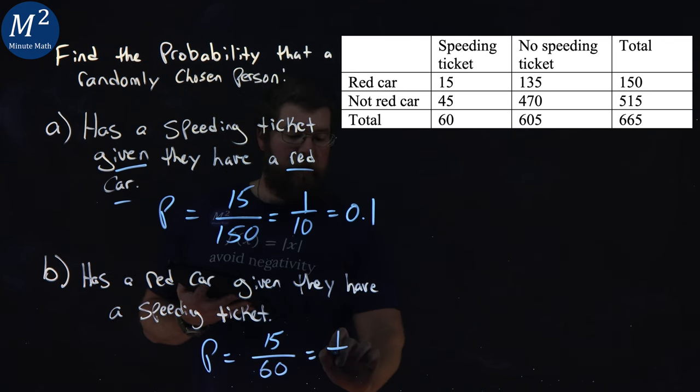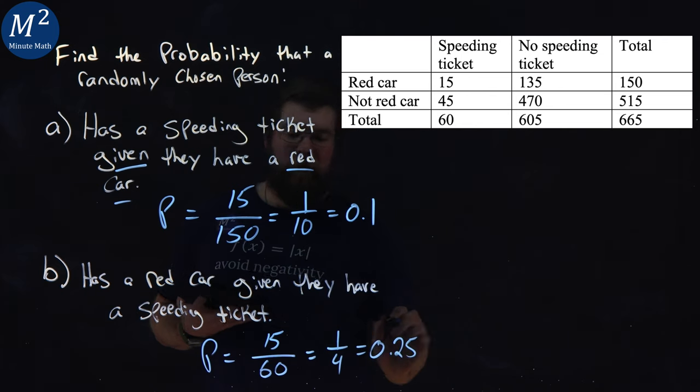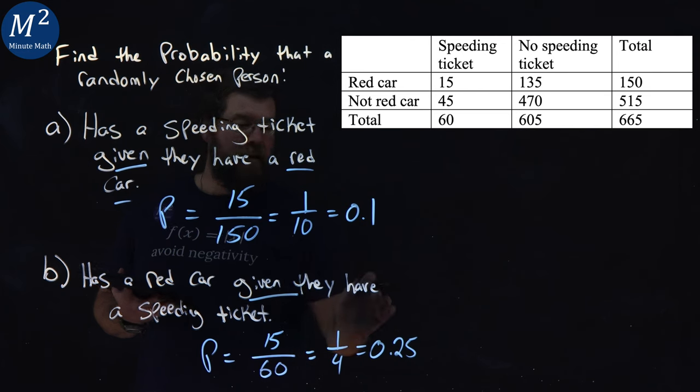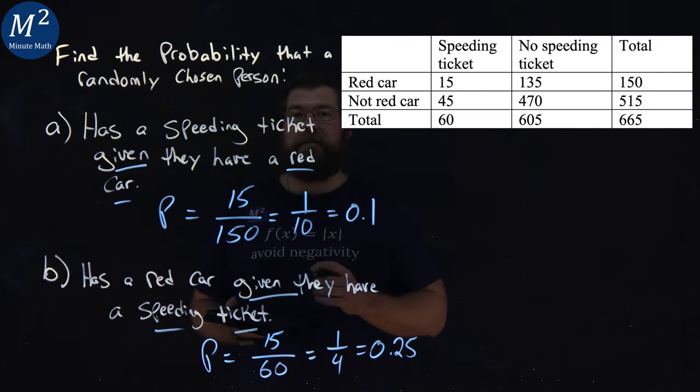We can simplify that to be 1 out of 4, and that comes out to be 0.25. So the probability that they have a red car given they have a speeding ticket is 0.25.